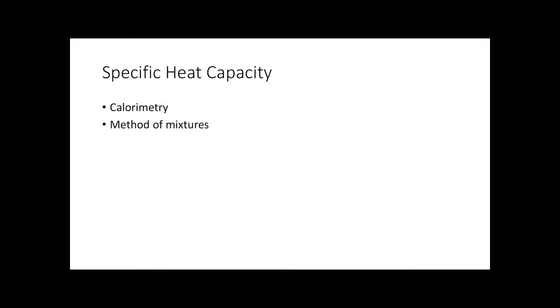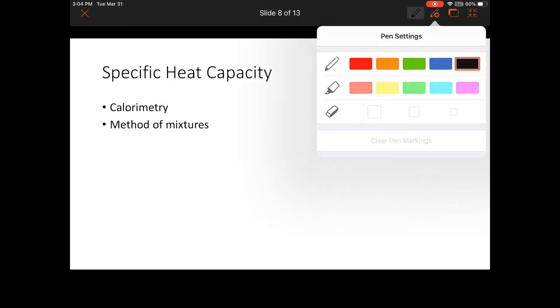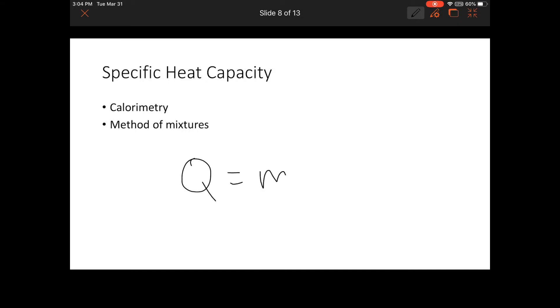All right, this lesson is a quick summary of the method of mixtures to determine the specific heat capacity or other unknown values in the specific heat capacity equation. Q equals mass times specific heat capacity times change in temperature, or energy equals mass times specific heat capacity times change in temperature. This is known as the method of mixtures.